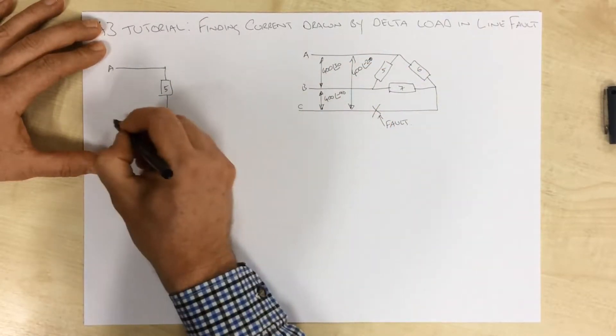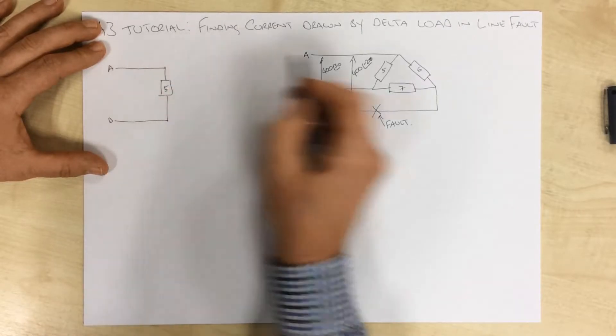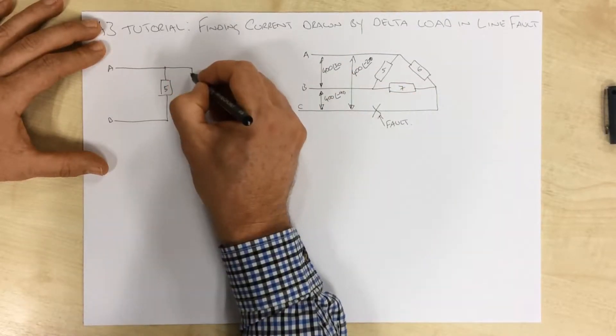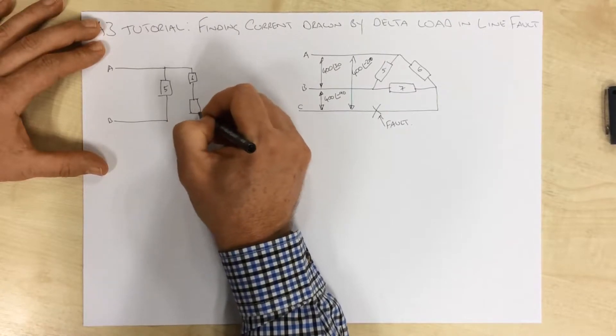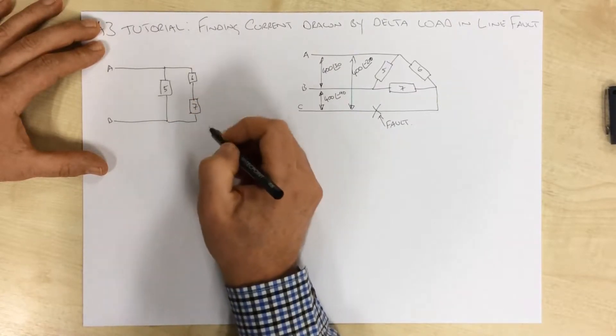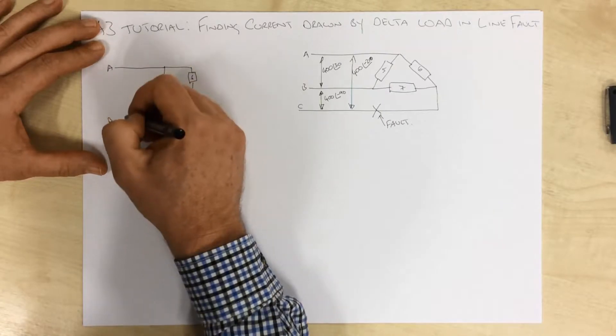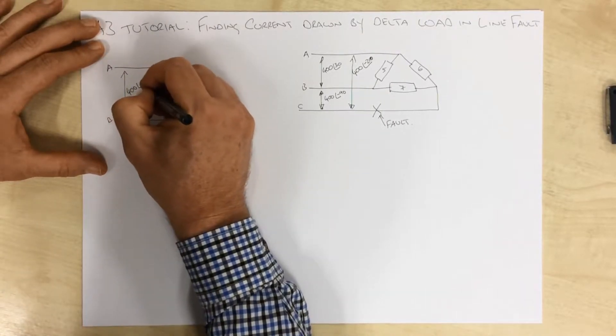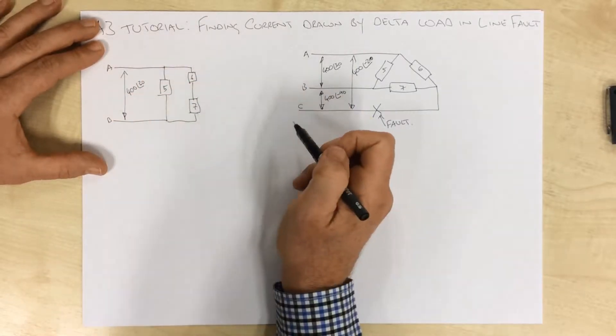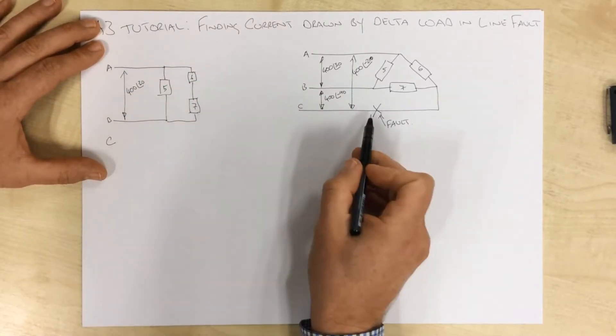And to line B, and in parallel with that, we have our 6 ohms and our 7 ohms like that. And we have 400 volts at 30 degrees across here. Line C is faulty, we've got a fault here.